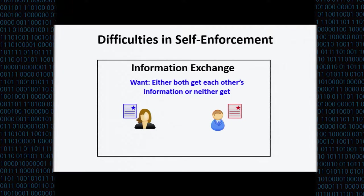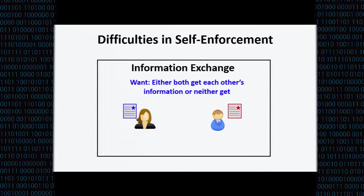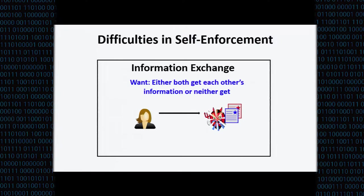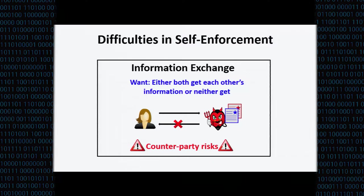You have two parties: Alice and Bob. Alice has a blue document and Bob has a red document, and they want to exchange them — Alice wants to get the red document, Bob wants to get the blue document. You want to do this in a way that guarantees the exchange is fair: either both of them get the other's document or neither does. You can't simply have Alice send her document first, because Bob might just refuse to send his in return.